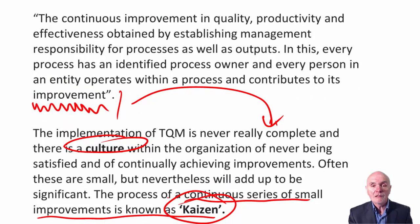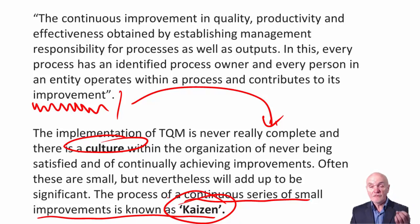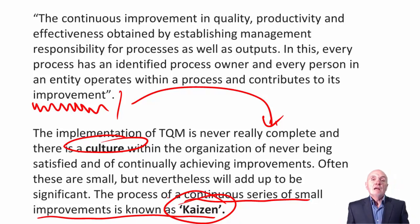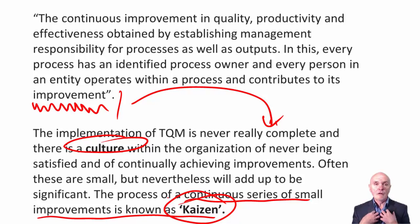TQM isn't just about production — it means everything happening in the organization. Organizations that have embraced TQM will say, for example: phones must be answered within three rings; if someone asks a query, you must be able to put it through to the right person; if something is going to be delivered in three days, it will be delivered in three days; invoices must be precise. Every interaction of the consumer with the organization must be of the highest possible quality.